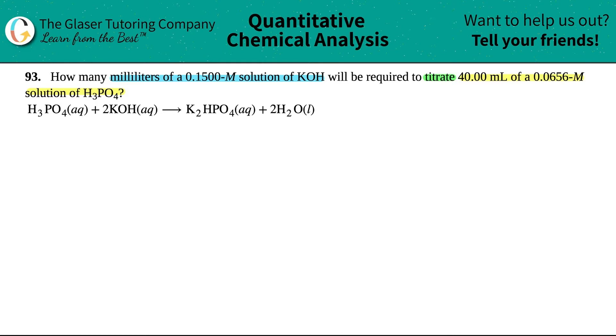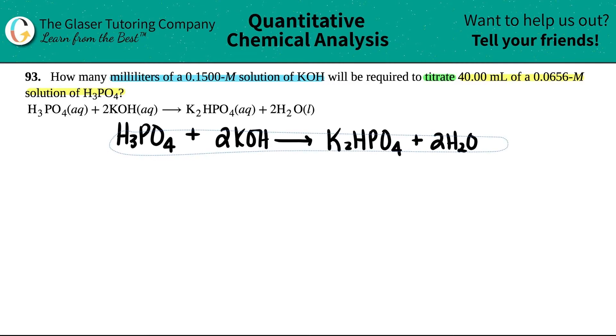In this case we do have to use the balanced equation, so I'm just going to rewrite it a little bigger. H3PO4 plus 2KOH yields K2HPO4 plus 2H2O. Who cares about the states when you're doing the math? Since there's coefficients, it's probably balanced. I'm just going to give it a quick check over and looks pretty balanced to me.